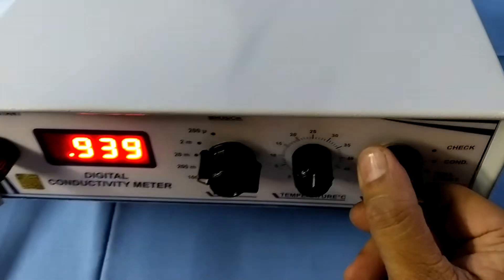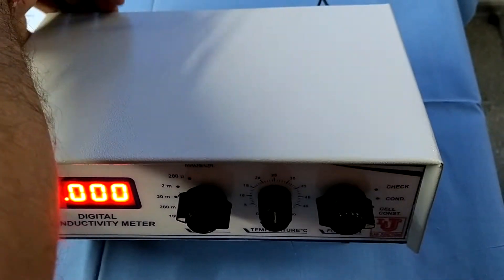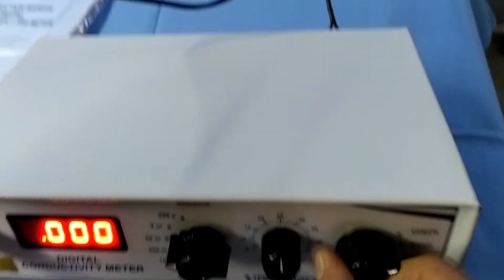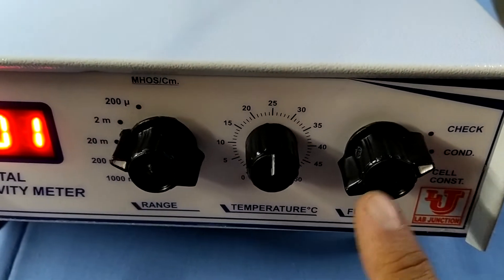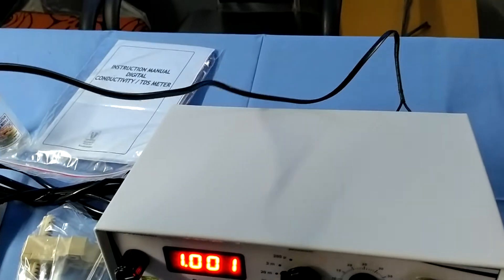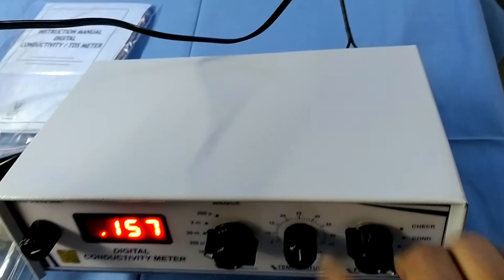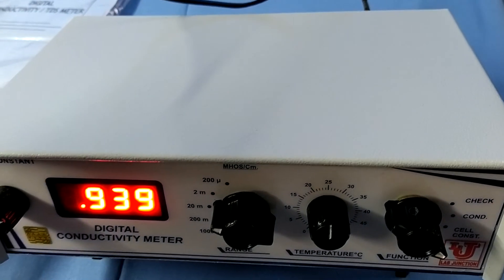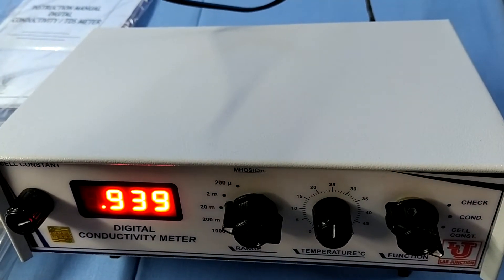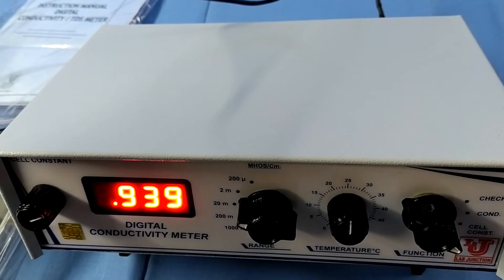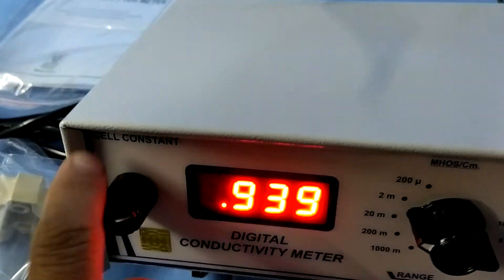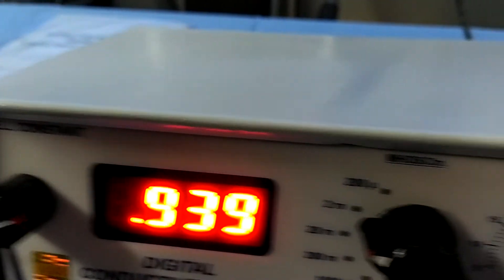Now, you can again switch on the machine, like this way. And you check your position, that is your 1.000. Now, you direct go to cell constant. And you have noted 0.939 on your notebook. Then, insert same value with the help of cell constant knob, 0.939 from cell constant knob. And go to conductivity.